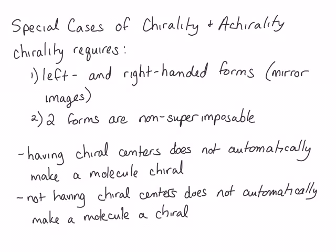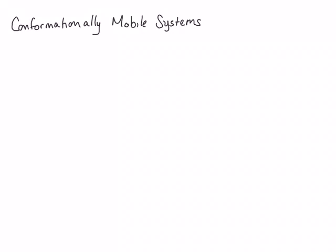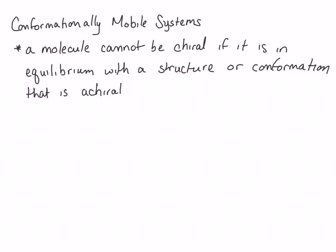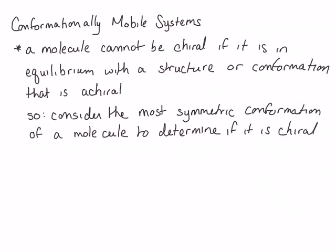Now let's look at some examples of these special cases. The first case we're going to look at are conformationally mobile systems. This is a fancy way of saying that molecules can change conformation, which we already know. Most organic molecules are conformationally mobile. This is important to the discussion of chirality, however, because a molecule cannot be chiral if it is in equilibrium with a structure or conformation that is achiral. Remember that the easiest way to determine if a molecule is achiral is to look for a plane of symmetry. Therefore, we should consider the most symmetric conformation of a molecule to determine if it is chiral.